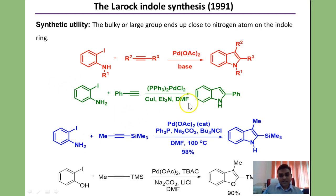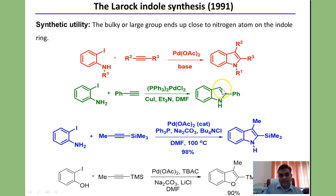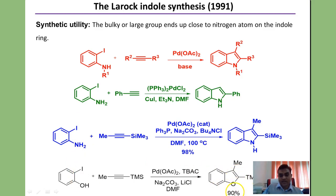Some classic examples of Larock indole synthesis show that the bulkier group between R2 and R3 is placed nearer to nitrogen at the 2-position, giving a 2-phenylindole. Here the synthesis of indole is achieved in 98% yield. The methodology can also be extended to synthesis of benzofused derivatives — using ortho-iodoaniline gives a benzofused product in 90% yield.